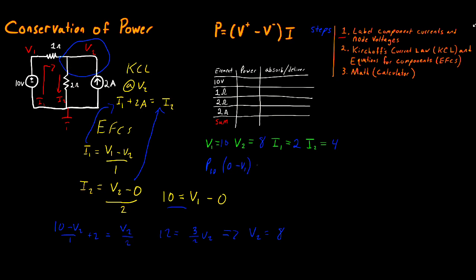For the 10 volt source, we subtract in the direction the current is flowing — from the ground node to V1. So we write 0 minus V1, multiplied by I1: that's (0 minus 10) times 2, which equals negative 20 watts. The negative sign is very important — it tells you the 10 volt source is delivering energy to the circuit. A negative result means the component is losing energy (energy goes out); a positive result means energy is going into that component. So this is negative 20 watts, delivered.